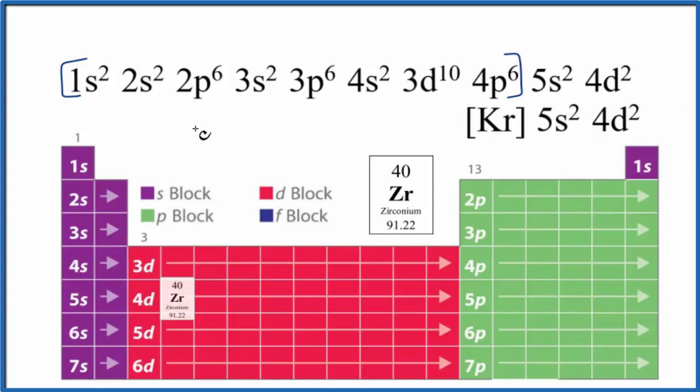So for zirconium, it often forms these Zr4+ ions. The positive means it's lost electrons. Since electrons are negative, we lose that negative charge, become positive. So 4+, that would mean we would get rid of these 4 valence electrons here.